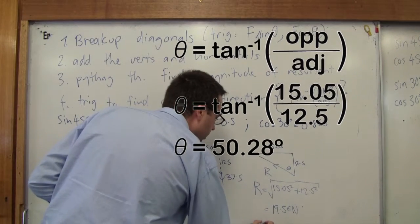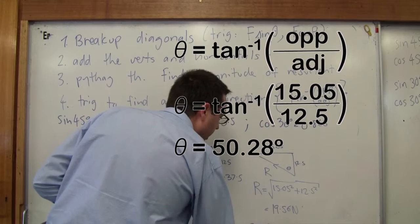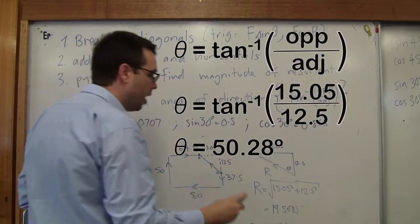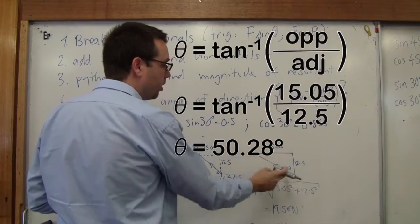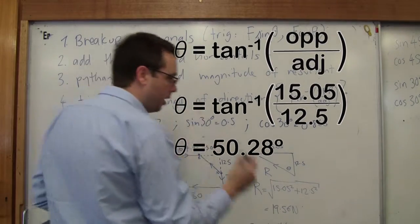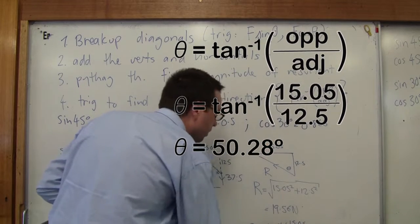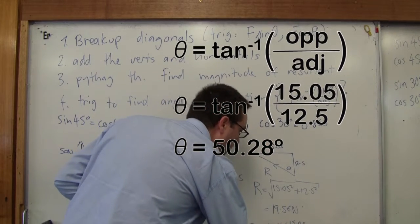I'm going to say theta equals the inverse of tan, or the arc tan if you're using the computer, atan on Excel, and it's going to be the opposite, which is opposite my theta, 15.05 over 12.5, which is our adjacent. Okay, can someone type that in the calculator for me?